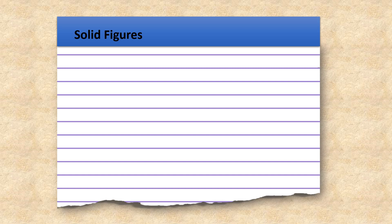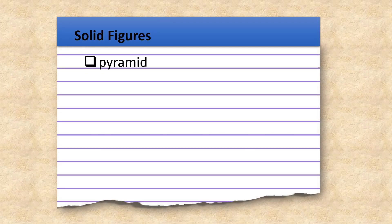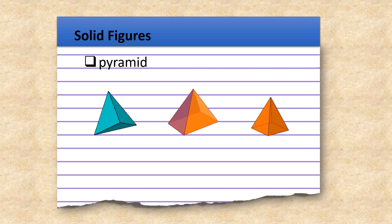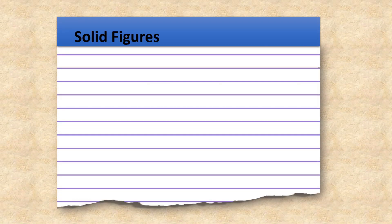You are now familiar with the different solid figures. Let's see what you have learned. What are the different solid figures? Rectangular prism, pyramids, cylinder, cone, and sphere.